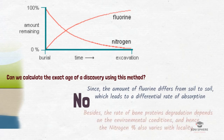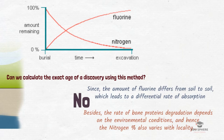Besides, the rate of bone protein degradation depends strongly on environmental conditions such as temperature and humidity. After almost 250,000 to 300,000 years, the amount of nitrogen in bones at different temperatures will be very low and almost non-detectable. This is why absolute dates cannot be determined. However, this method is regarded as one of the most important techniques for relative dating.